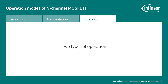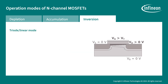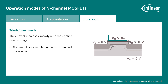The inversion mode has two types of operation. The first is the triode or linear mode, where the current increases linearly with the applied drain voltage. In this case, the gate voltage is higher than the gate threshold voltage. The inversion layer increases and the N channel is formed between the drain and the source terminals, meaning current will flow. This current is proportional to the gate and drain voltage, which is higher than zero.